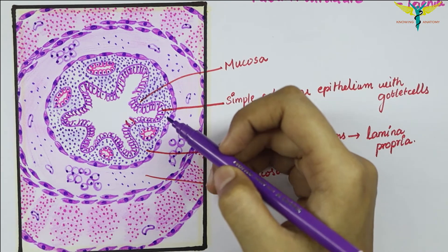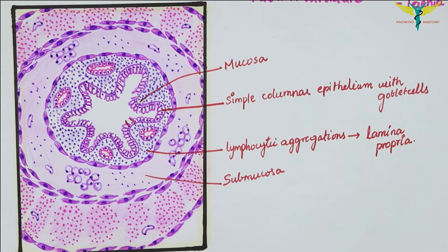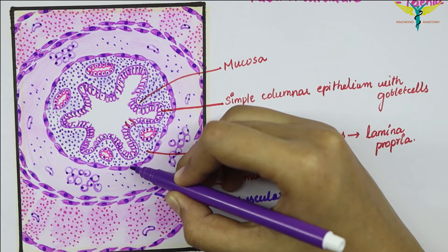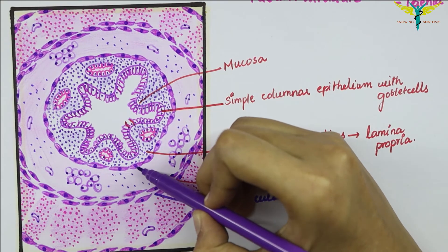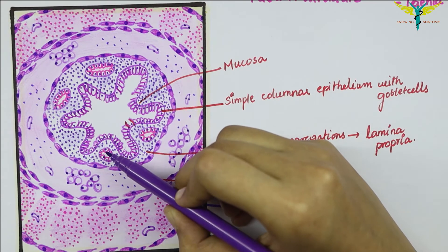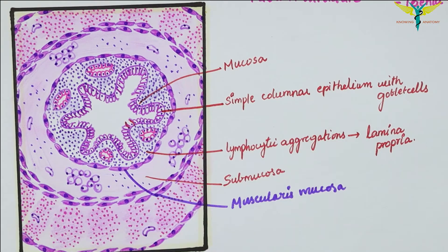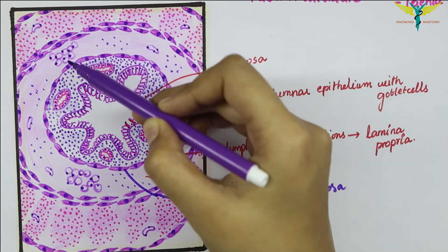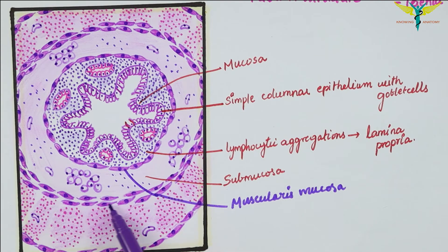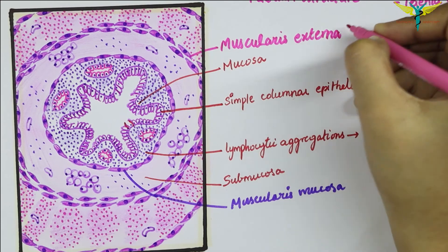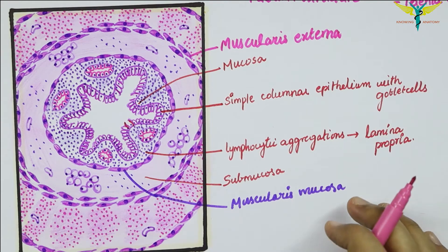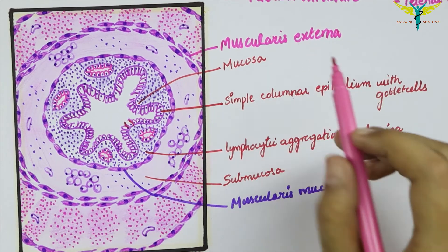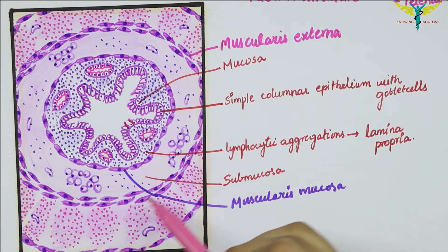The submucosa is surrounded by a smooth muscle layer, the muscularis externa, which is followed by the serosa. The muscularis mucosa is an inner lining that differentiates the mucosa from the submucosa. Do not get confused between the muscularis mucosa and the muscularis externa: the muscularis mucosa is a layer present within the mucosa, while the muscularis externa is the third layer of the whole GIT.